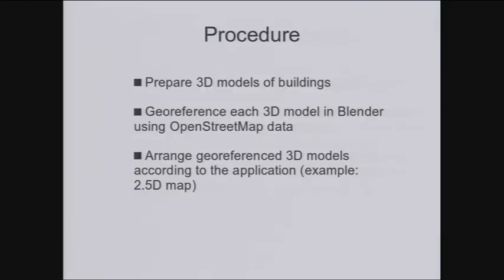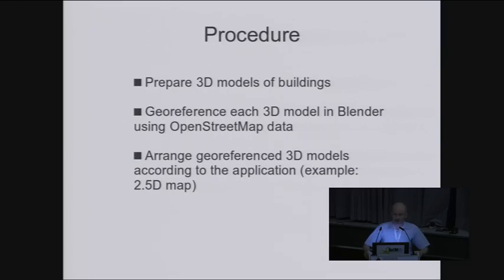So the procedure to generate a two and a half dimensional map is quite simple. Prepare 3D models of buildings. Then georeference each 3D model in Blender with OpenStreetMap data. And at the end, arrange georeferenced 3D models according to the application. In our case, it's 2 and a half D map.